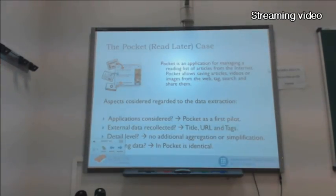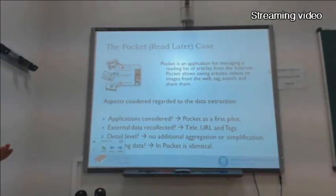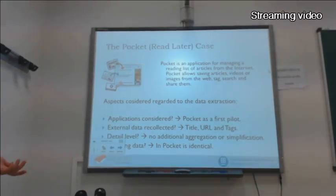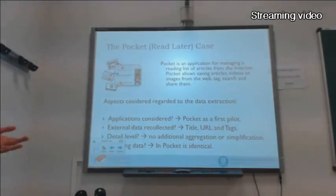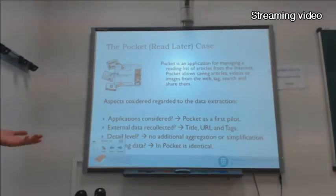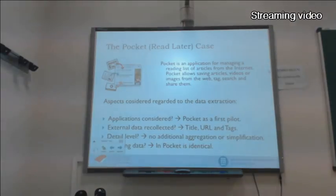We did a case study with the Pocket application, which is an application for managing a reading list of articles from the internet. It allows saving articles, videos, and images, and tagging and searching them. We selected Pocket as a first pilot, collecting title, URL, and tags as the external data to simplify the case, with no additional aggregation needed. The matching is straightforward: Pocket's title maps directly to the informal learning collector's title, and so on.